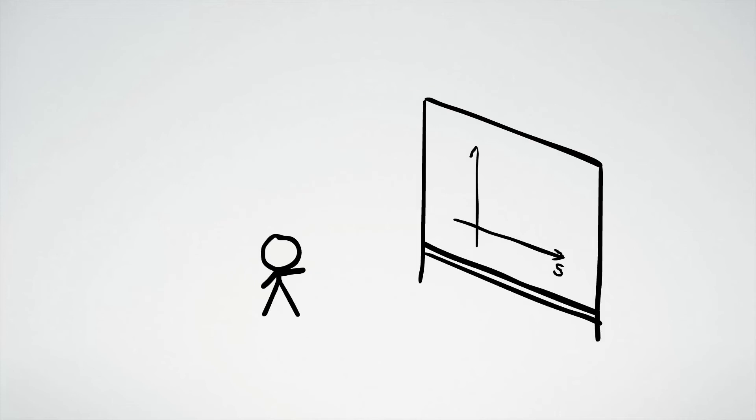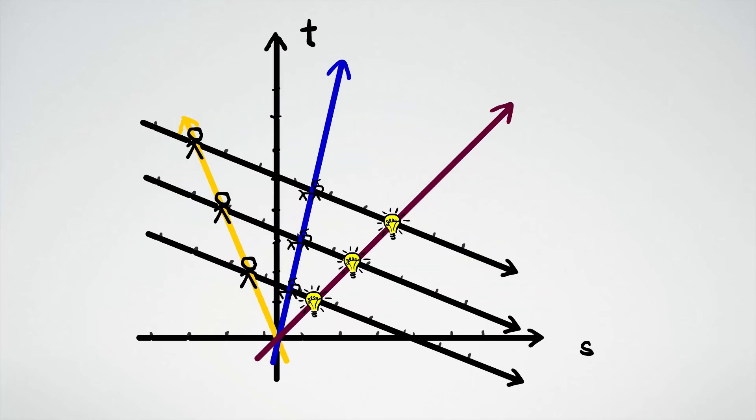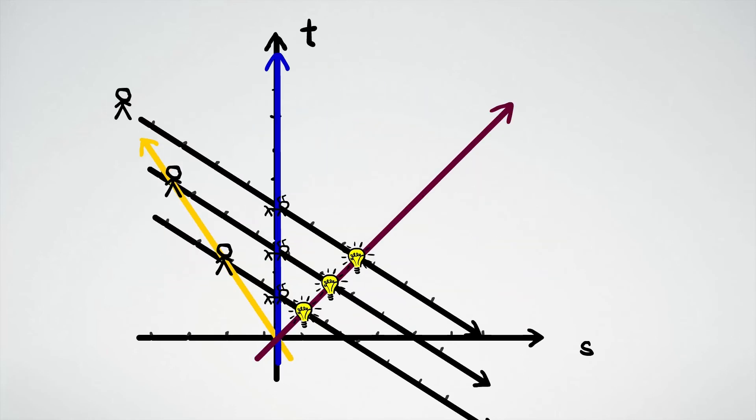Luckily, there is another transformation that can accommodate the constant speed of light. It performs a kind of squeeze rotation to the space-time diagram, which leaves the speed of light unchanged even while it changes all other speeds.